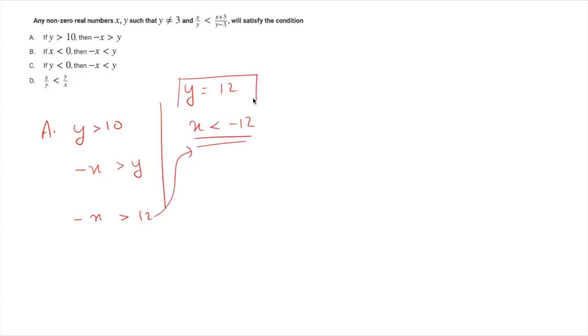So, I have randomly taken y is equal to 12, some value more than 10 and I multiplied by minus 1 on both sides. So, inequality gets reverse. This is what I should get. So, substituting y is equal to 12 in the equation, I must get x less than minus 12. If this happens, then option A is the answer. Otherwise, it's option B, C or D.